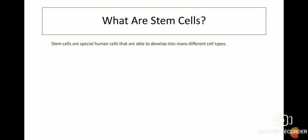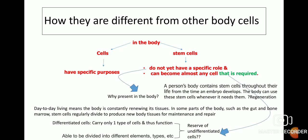So what are stem cells? Stem cells are special human cells that are able to develop into many different cell types. The question arises: how are they different from other body cells? In our body there are mainly two kinds — normal cells and stem cells. Normal cells have specific purposes, but stem cells do not yet have a specific role and can become almost any cell that is required.